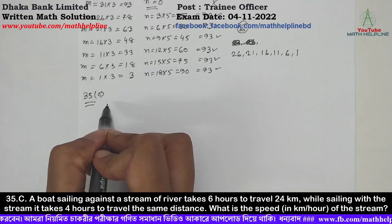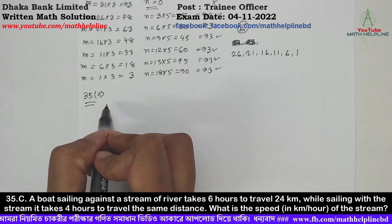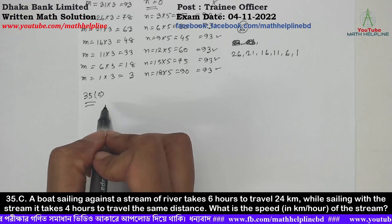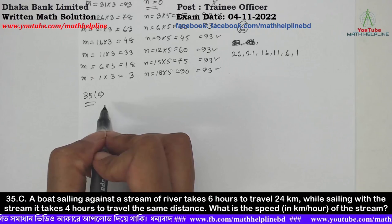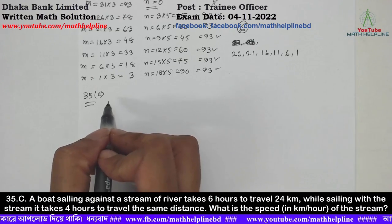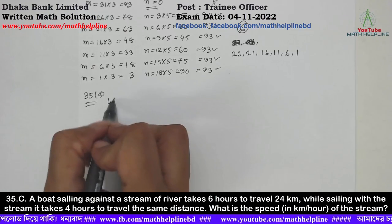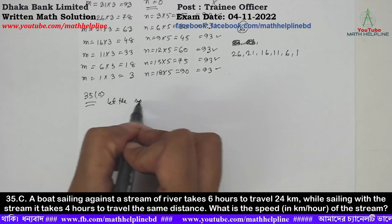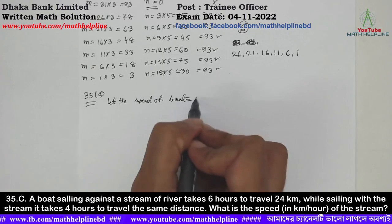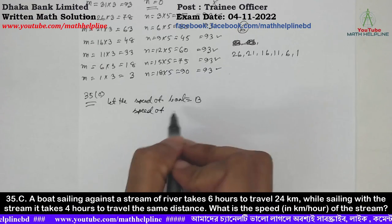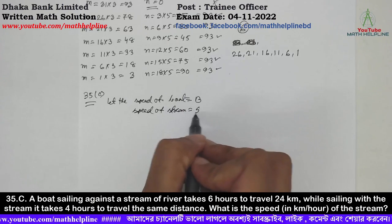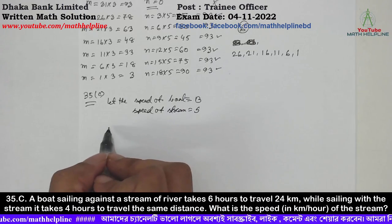A boat sailing against a stream of a river takes six hours to travel 24 kilometers, while sailing with the stream it takes four hours to travel the same distance. What is the speed in kilometers per hour of the stream? Let the speed of the boat equal to b and speed of stream equal to s.